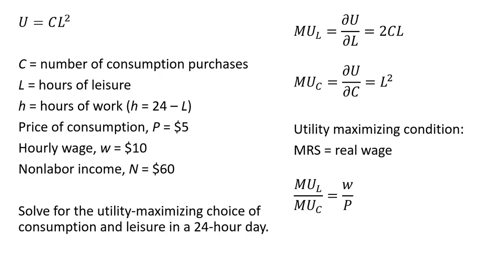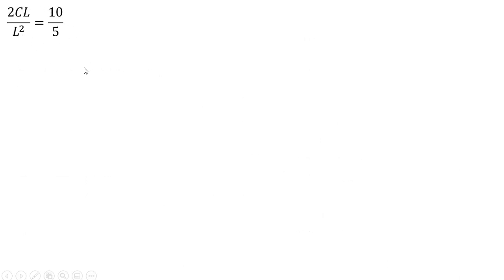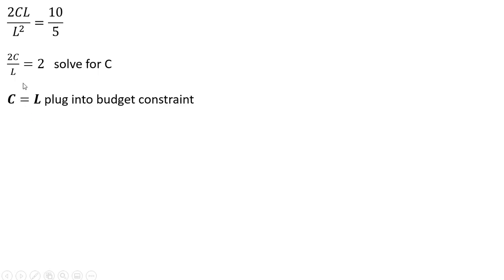Making our substitutions into the utility maximizing condition: on the left-hand side we have 2cl, the marginal utility of leisure, divided by the marginal utility of consumption, l squared. The wage is 10 and we divide that by the price level of 5. Simplifying this condition and solving for c, we get c equals l.